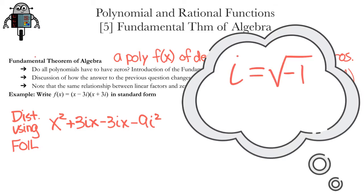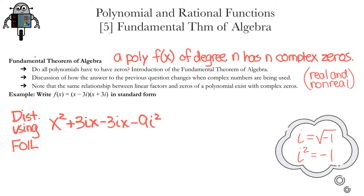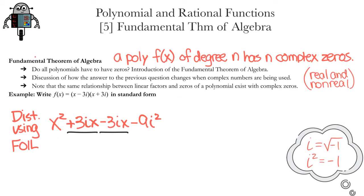Remember, i is the imaginary unit, the square root of negative 1. Therefore, i squared is negative 1. Now we can simplify. The positive 3ix and the negative 3ix subtract out, and the i squared becomes negative 1. So we get x squared minus 9 times negative 1, which is x squared plus 9.